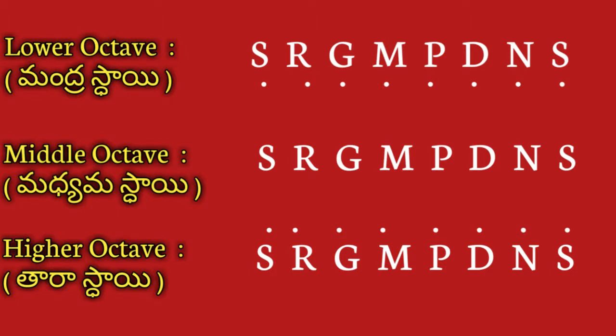If the dots are placed above the Swaras, they belong to the higher octave range. Middle octave range Swaras have no dots at all.